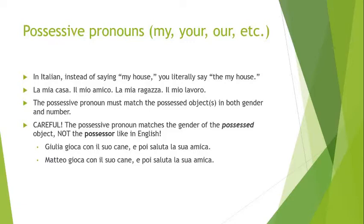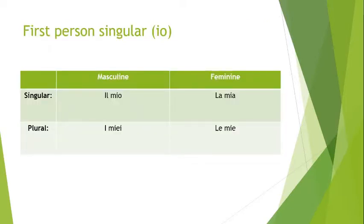What matters is the gender of the noun — the possessed thing. 'Il suo cane, la sua amica.' Once you get that in your head, you'll have it. Now let's look at what these possessive pronouns are. Starting with first person singular, here's a chart with a masculine column and a feminine column, and singular and plural rows: il mio, la mia, i miei, le mie.